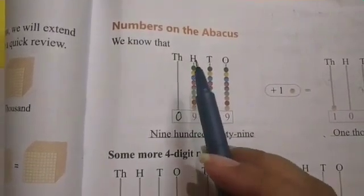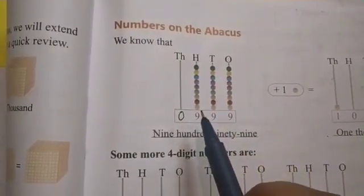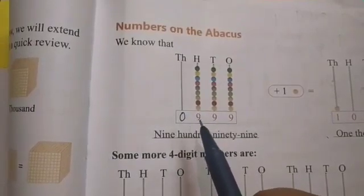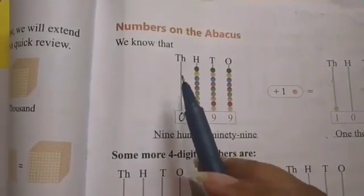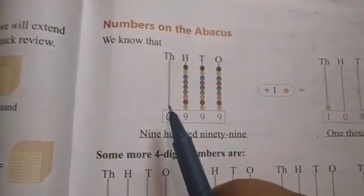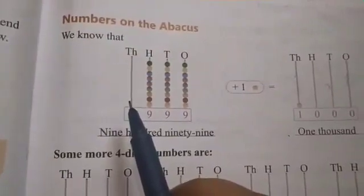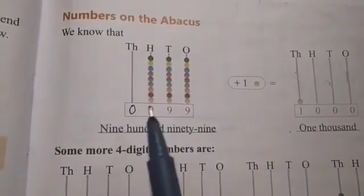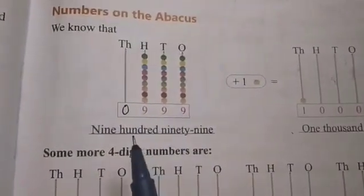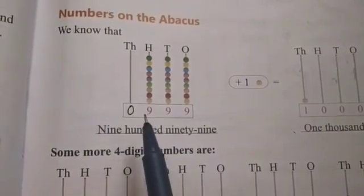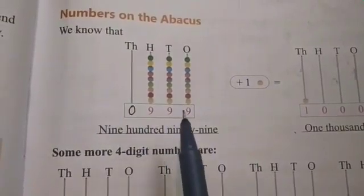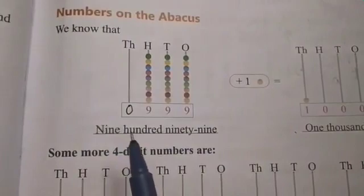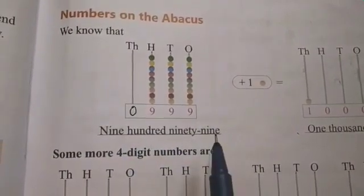At the 100's place there are 9 beads, so we will write 9 here. And at the 1000's place there is no bead, so we will write 0 here. Now, the number formed is 999, and its number name is nine hundred ninety-nine.